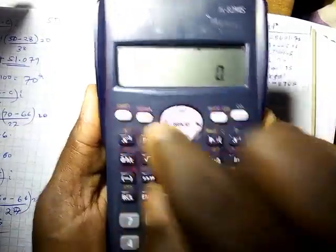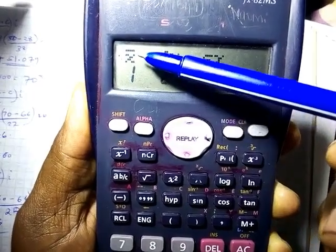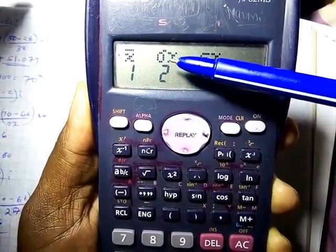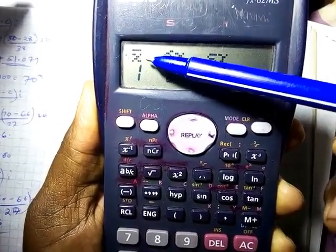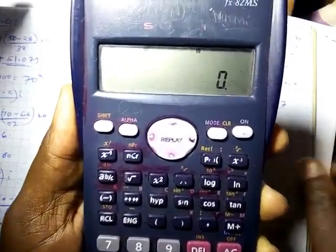You again press shift. Press shift 2. Shift 2 brings you first the mean. Number 2 is the standard deviation, this one is the standard deviation, and this is the mean. So I want to confirm what we did.